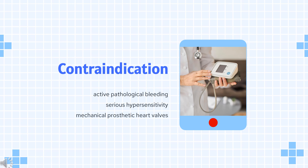Dabigatran is also contraindicated in patients who have a history of serious hypersensitivity reaction to dabigatran, such as anaphylaxis or anaphylactic shock. The use of dabigatran should also be avoided in patients with mechanical prosthetic heart valves due to the increased risk of thromboembolic events — such as valve thrombosis, stroke, and myocardial infarction — and major bleeding associated with dabigatran in this population.